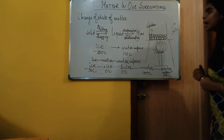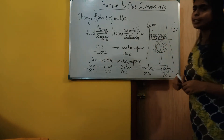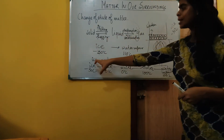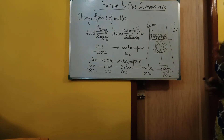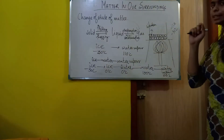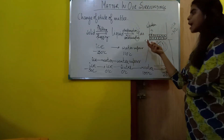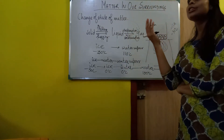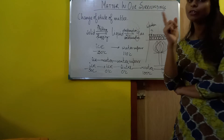Suppose I have given you ice at minus 30 degrees and told you to convert it into water vapor at 100 degrees. What will you do? You will provide heat to this system and you will see the conversion: ice converting into water, and water converting into water vapor. The heat I am providing to the ice at minus 30 degrees will be absorbed by the ice as kinetic energy. Kinetic energy means motion, so as kinetic energy increases, the motion of the particles increases.